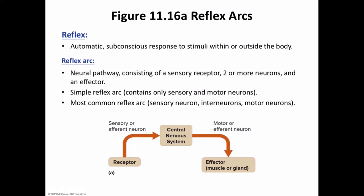The reflex arc begins with a sensory receptor at the dendritic end of a sensory neuron, taking those impulses in. Impulses on these sensory neurons enter the central nervous system and constitute a sensory or afferent limb of the reflex, as shown in figure 11.16A. The central nervous system is a processing center. Afferent neurons may synapse with interneurons, which may in turn connect with other parts of the central nervous system, and ultimately connect with motor neurons whose fibers pass outward to effectors. Efferent neurons control effectors — you'll find that on page 412.